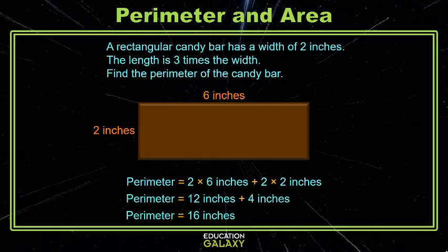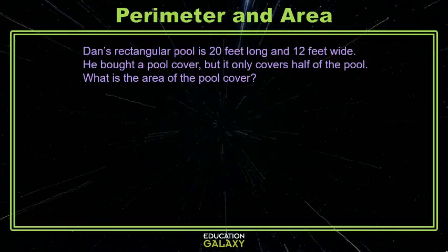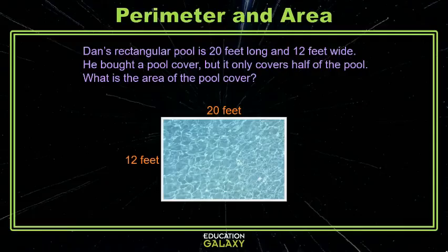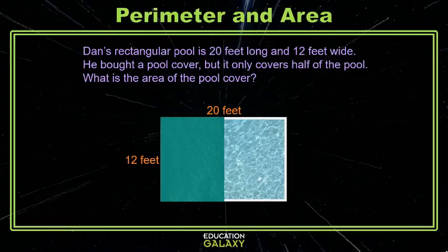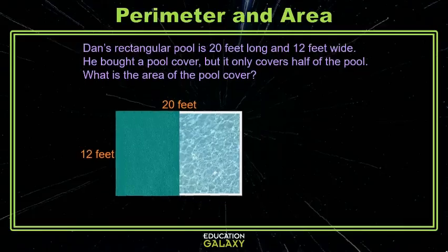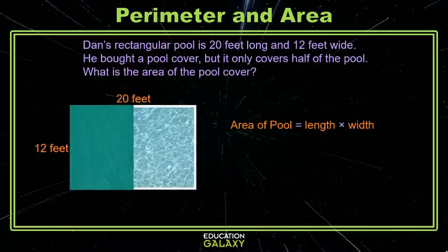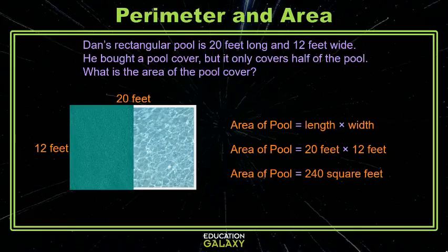Let's look at an example with area. Dan's rectangular pool is 20 feet long and 12 feet wide. He bought a pool cover, but it only covers half of the pool, and we want to know the area of the pool cover. Here's our pool, 20 feet by 12 feet, with the pool cover covering only half. Let's start by finding the area of the whole pool using length times width.